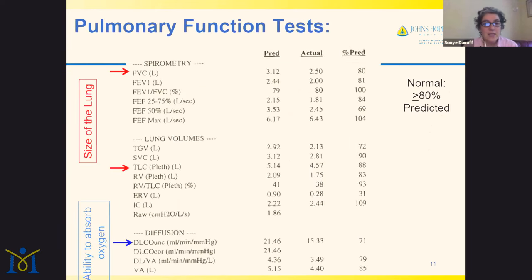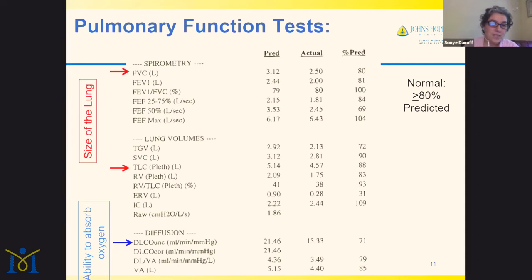Pulmonary function testing is one of the best ways to measure the capacity of the lung — both its size and its ability to absorb oxygen. There are three key numbers to keep an eye on. The first is FVC — forced vital capacity — how big a breath you can blow out when you take a deep breath and blow out hard. The second is TLC — total lung capacity — the largest amount of air you can put in your chest. The third is DLCO — the diffusion capacity — a measure of how well you absorb oxygen from the air.